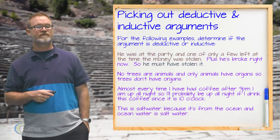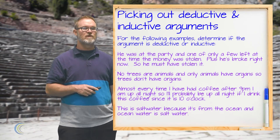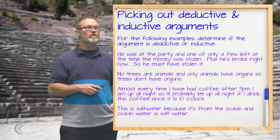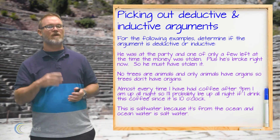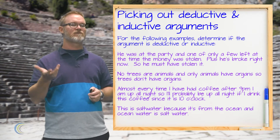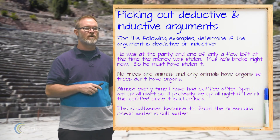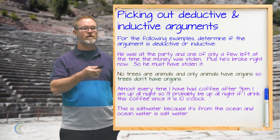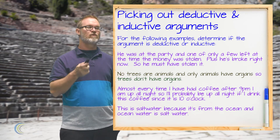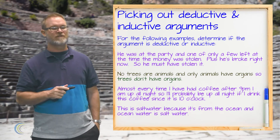Next: no trees are animals and only animals have organs, so trees don't have organs. This is a deductive argument. The conclusion must follow from the premises — if no trees are animals and only animals have organs, then trees can't have organs. The conclusion necessarily follows, so it's deductive.